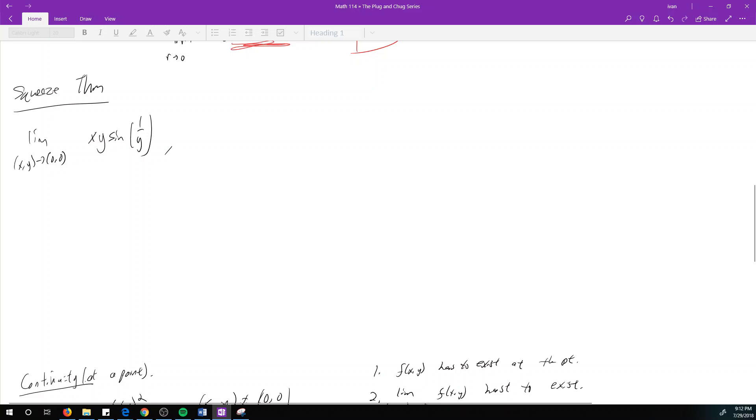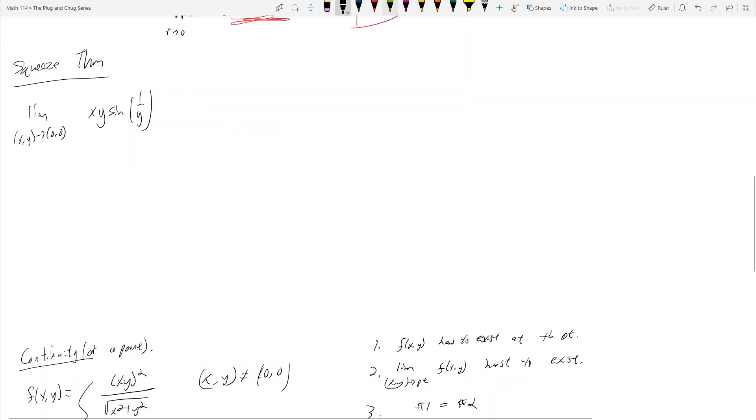So what we want to do when we use the squeeze theorem is recognize if there are any bounded functions. And in this case, there is because sine of 1 over y is bounded by negative 1 and positive 1. Sine can't get bigger than 1 or negative 1.